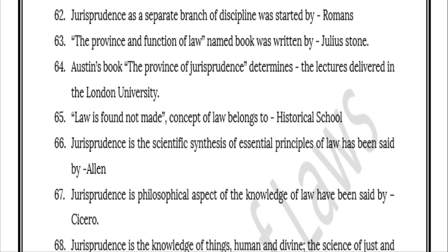These are questions that were asked in previous papers — for example, who started jurisprudence as a separate branch of discipline, the province and function of law by Julius Stone, Austin's book 'The Province of Jurisprudence Determined', and who delivered lectures at London University. I have incorporated whatever questions were asked, and I hope this capsule will benefit you. You will find the PDF link in the description box.